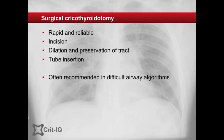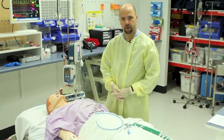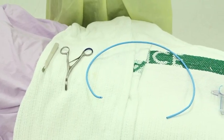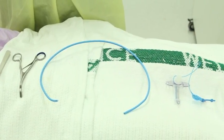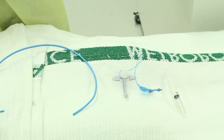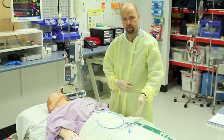A number of methods have been described that utilise horizontal or vertical incisions or both, along with trachea hooks, dilators and scalpel handles to maintain the tract, with no evidence for any one particular method. A simple, reliable method is presented here. The equipment required for a surgical cricothyroidotomy includes a scalpel blade, dilators, a bougie and a well-lubricated size 6 tracheostomy tube.